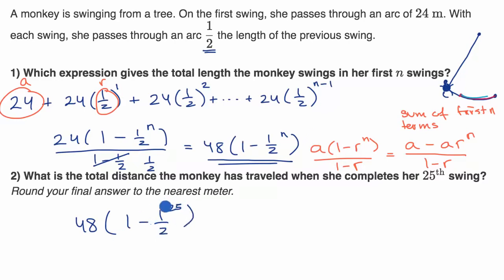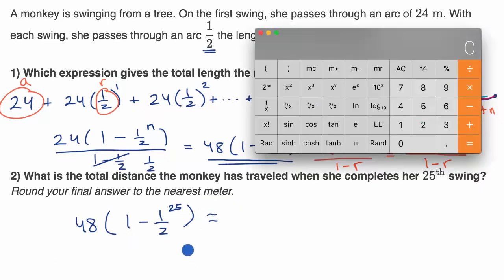Now this is going to be a very small number. So it's actually going to be pretty close to 48 meters. But let's see what this is equal to. And we're going to round to the nearest meter. All right, so let's get our calculator out.